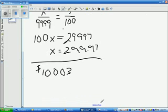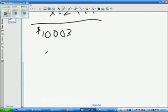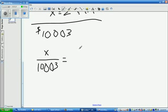So we would take X over $10,003. So that would be $10,003 equals, and 5%. So that would be 5 over 100.